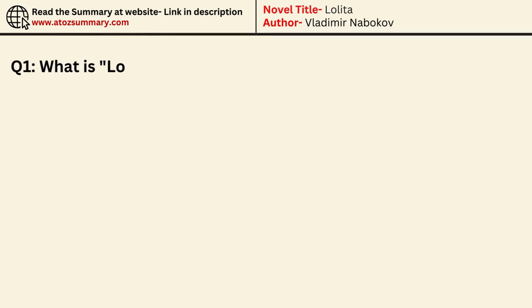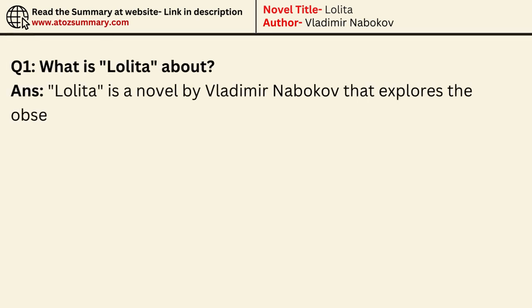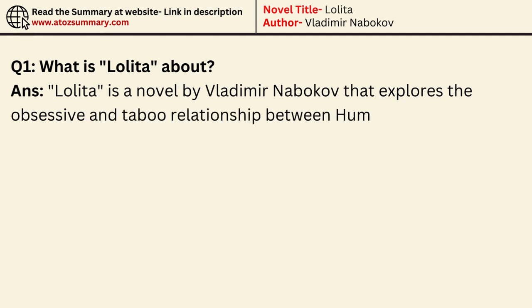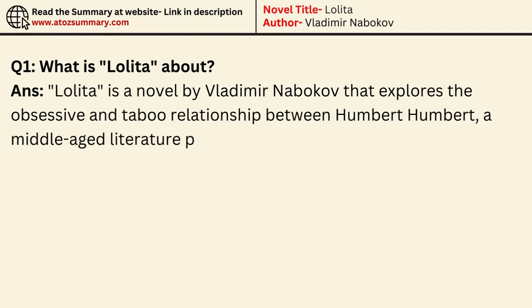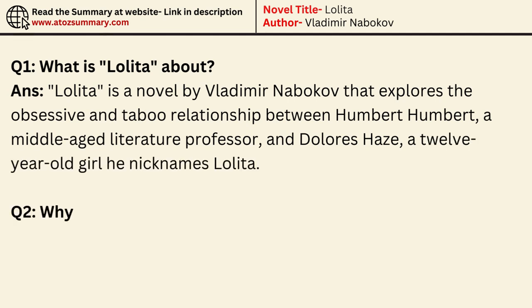What is Lolita about? Lolita is a novel by Vladimir Nabokov that explores the obsessive and taboo relationship between Humbert Humbert, a middle-aged literature professor, and Dolores Hayes, a 12-year-old girl he nicknames Lolita.